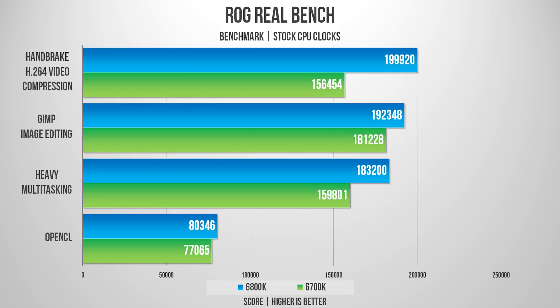Clearly, more threads account for faster computation, and that's exactly what we see in this collection — with H.264 compression, image editing, heavy multitasking, and OpenCL tests. The 6-core pulls ahead with a 28% boost for video compression and a 15% increase for heavy multitasking, while only 6% and 4% for image editing and OpenCL respectively.